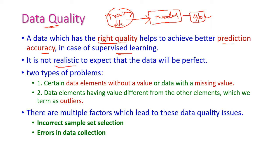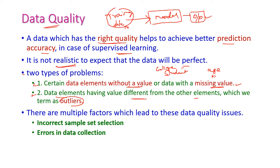In realistic scenarios, the quality of data will not be perfect. There are two types of problems when collecting data. First one is a certain data element without a value, which is called a missing value. Suppose we are collecting student data and some students are not willing to say their age — in such a situation, we will get a missing value. The second problem is data elements having values different from other elements, which are called outliers.